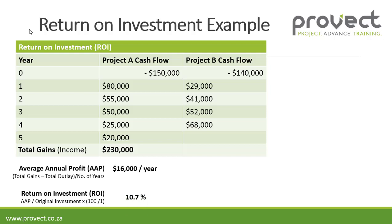Now for project B, the total gain or income is $29,000 plus $41,000 plus $52,000 plus $68,000, which totals $190,000.